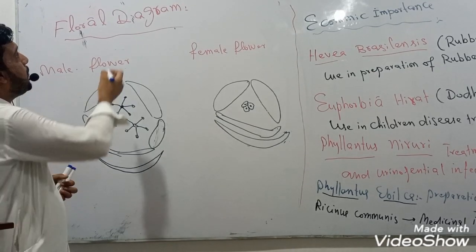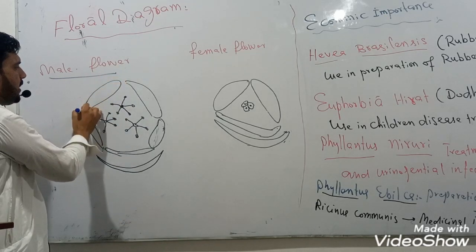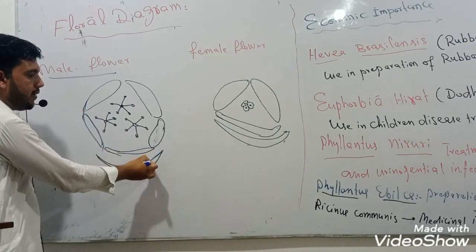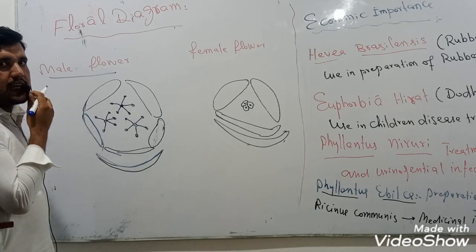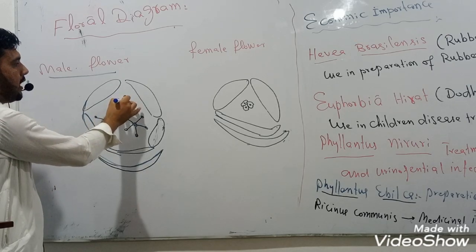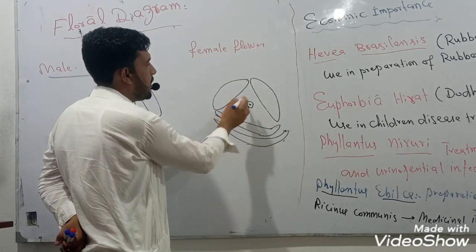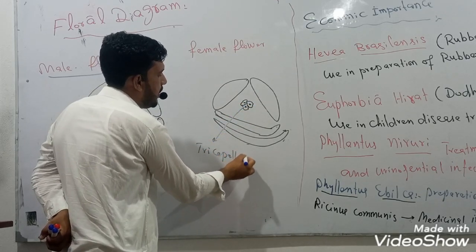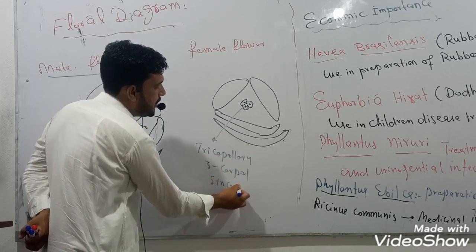The floral diagram of Ricinus: the male flower contains five stamens with bracts present. The five stamens are fused. In many cases the stamens are fused. The female flower also has bracts present, having three sepals in some cases, and is tricarpellary. The three carpels are syncarpous, meaning the carpels are fused with one another.